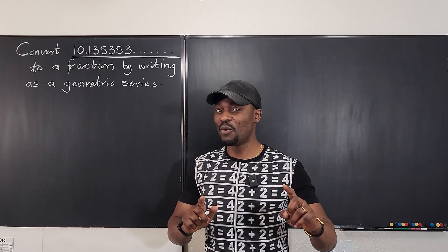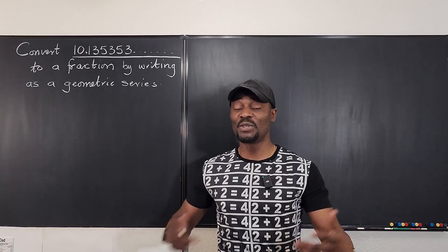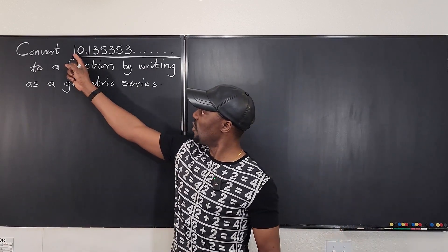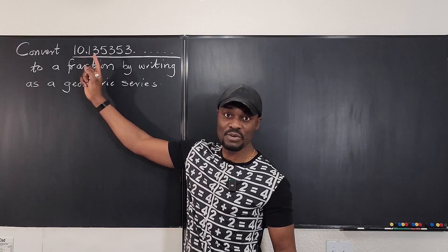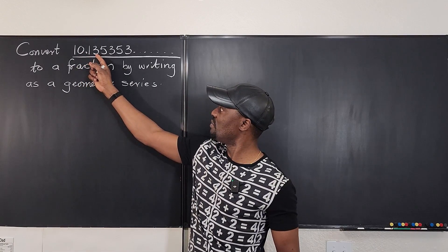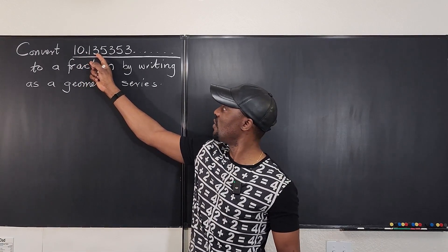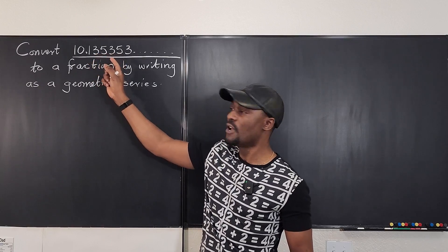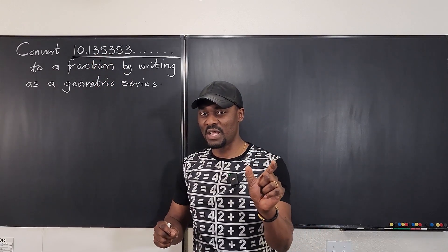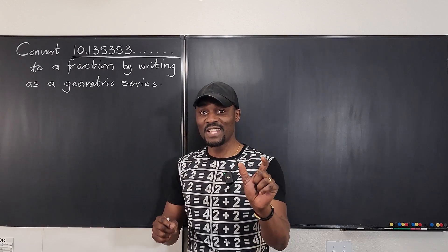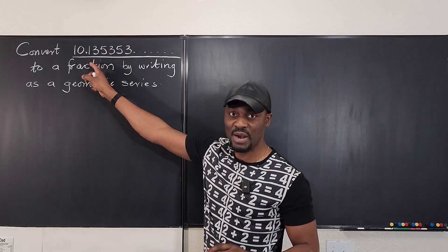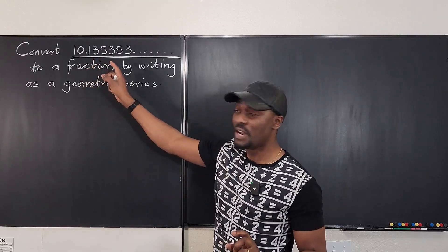You want to identify what part of the decimal is repeating. As you can see, this one is not repeating — the zero is not repeating, and this part is not repeating either. Is the three repeating? It goes three-five, three-five, so it appears that '35' is what's repeating. There are two digits consistently repeating.